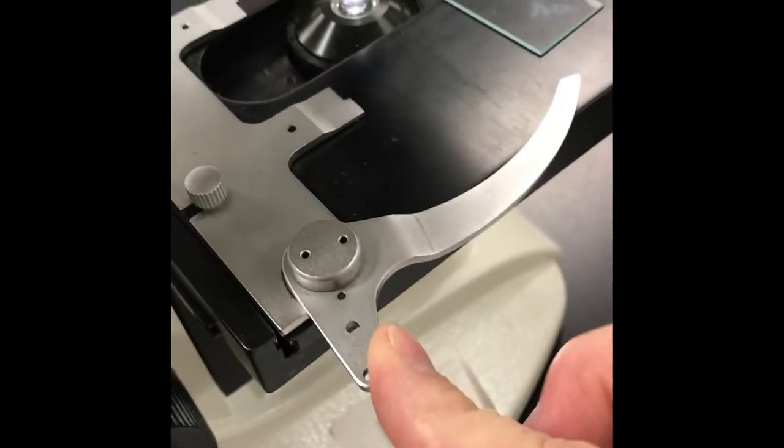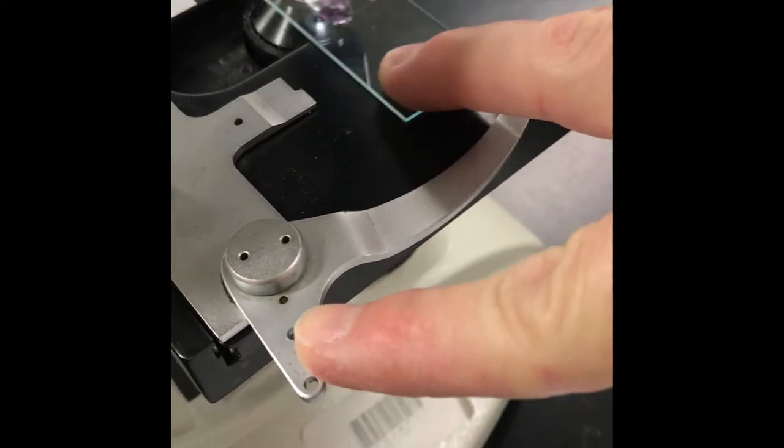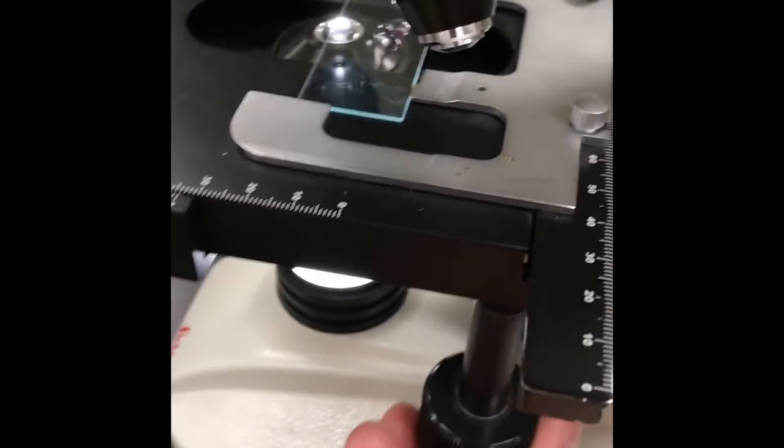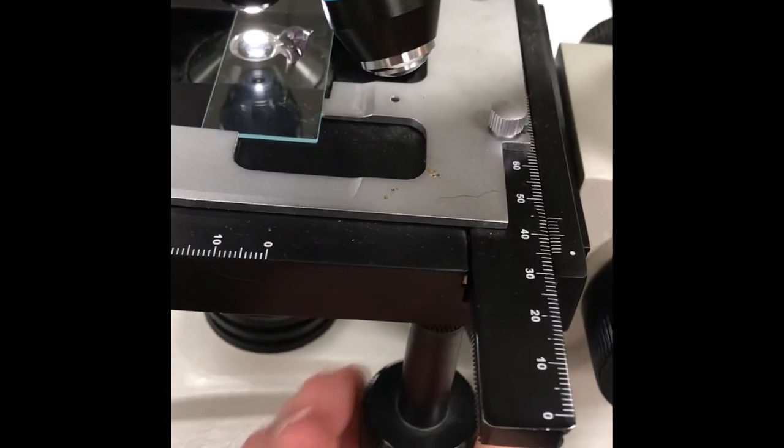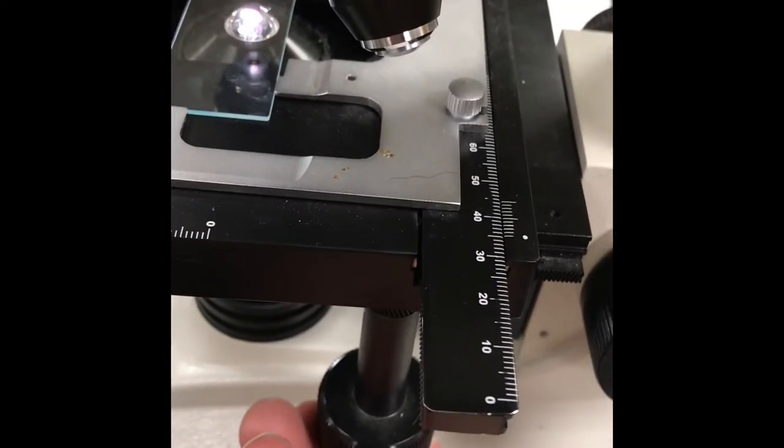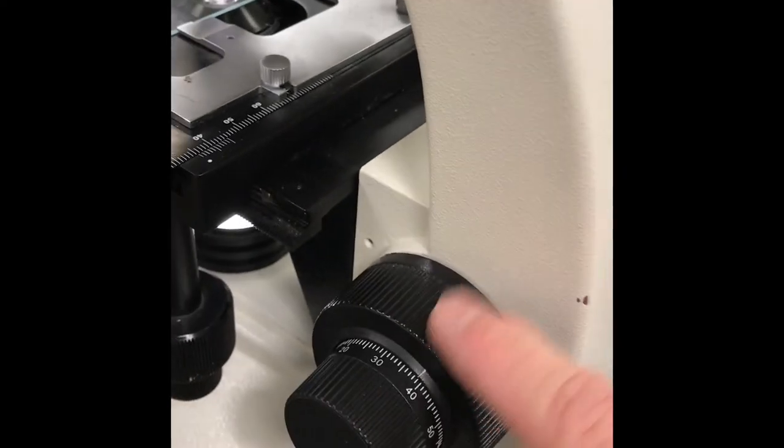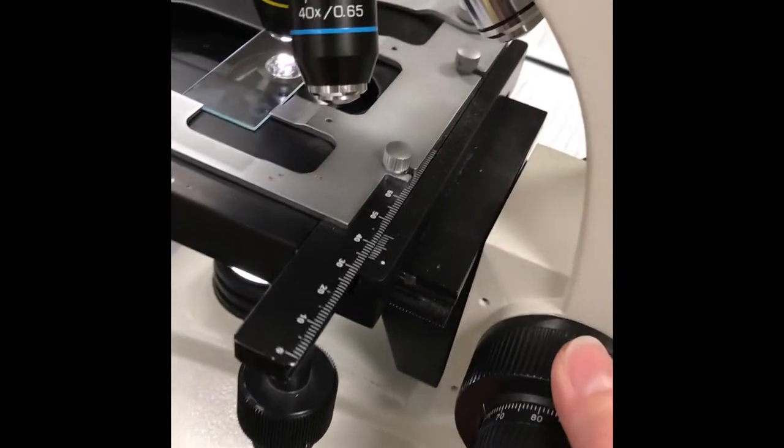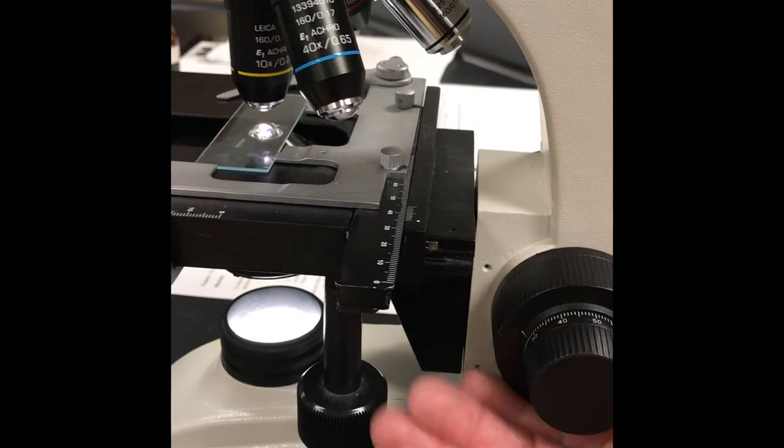Now without a cover slip, I'm going to focus this. I'll use the stage clip, pull that back, put the microscope slide on, and use the stage adjustment knobs right here to center it over the field of view. Now using the coarse adjustment knob, I'm going to look through the eyepiece and bring my stage up until I find something.